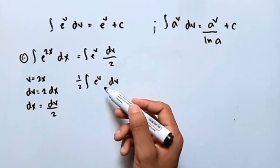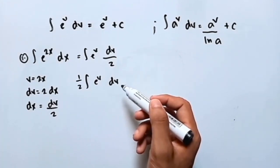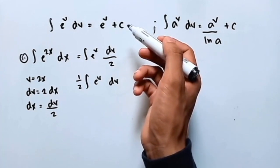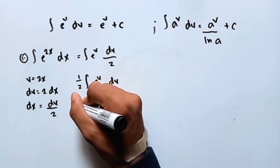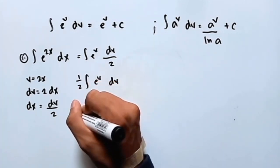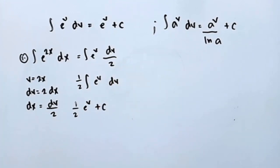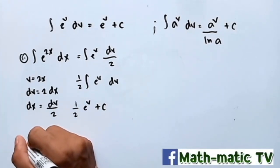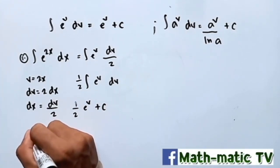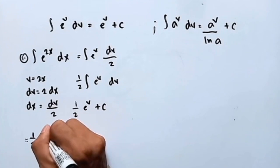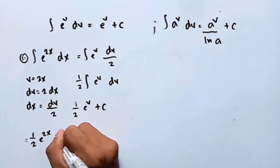Since 1 half is just a constant, I put it before the integral sign. The integral of e raised to v dv is equal to e raised to v plus c. Hence, the answer is equal to 1 half e raised to v plus c. But v is equal to 2x, so we substitute back to get the final answer: 1 half e raised to 2x plus c.